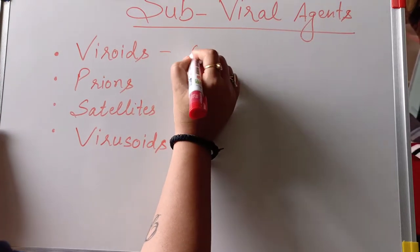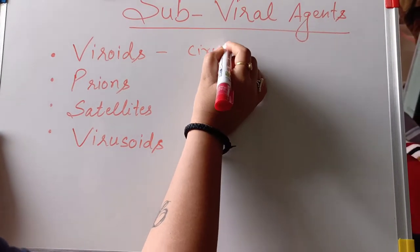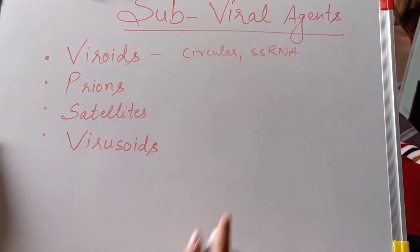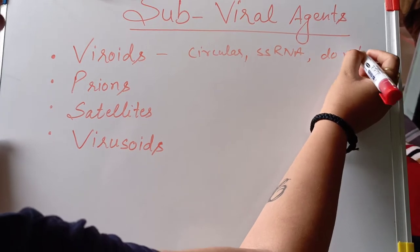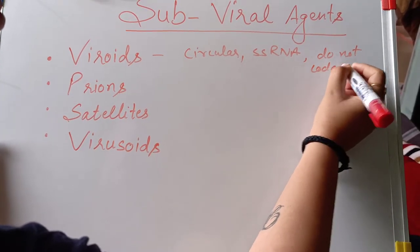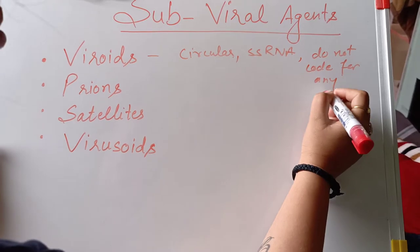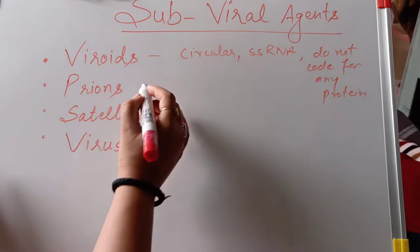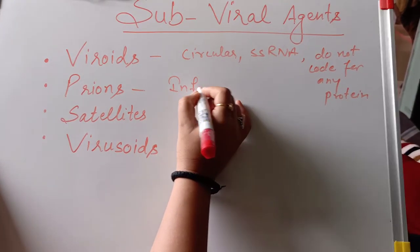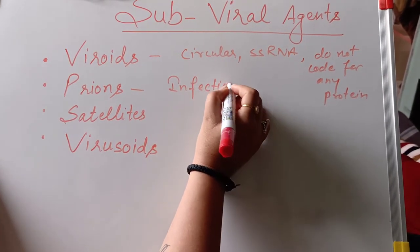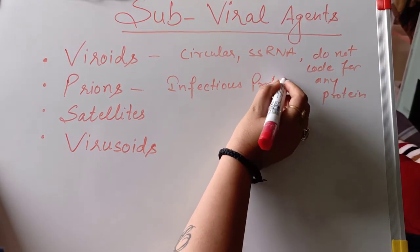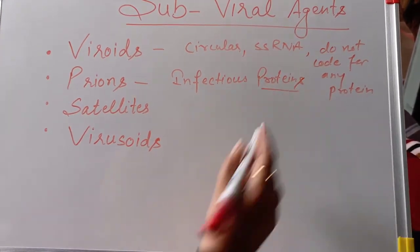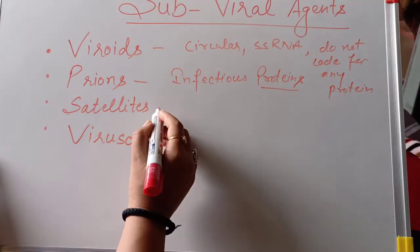First are the Viroids. These consist of circular single-stranded RNA molecules and do not code for any protein, which means they lack any capsid. Second are the Prions. These are infectious proteins — nucleic acid is absent, so they are mainly composed of proteins.